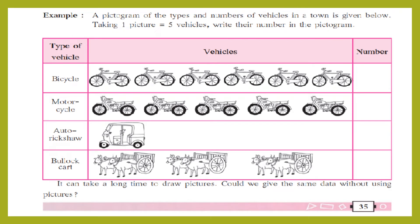Now children, let's understand why we need to draw a bar graph. This is an example from textbook page number 35. A pictogram of the types and number of vehicles in a town is given, where one picture equals five vehicles. So one bicycle drawn as a pictogram represents five bicycles in a town. We have to find out the number of bicycles represented.